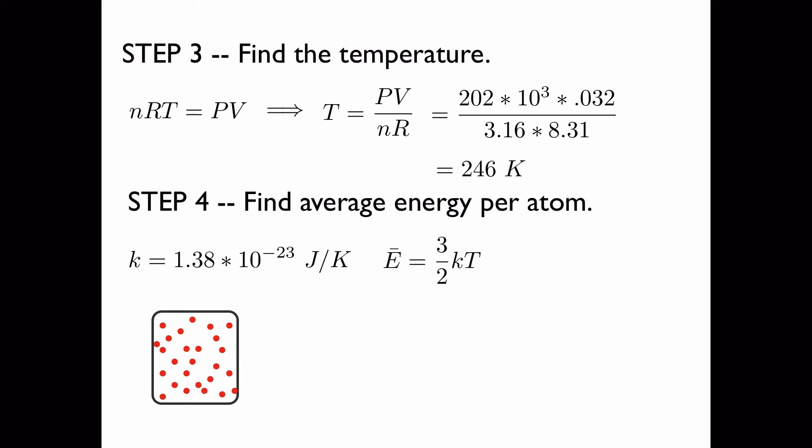This expression applies to an ideal gas but it can also apply to some other gases. So we plug in Boltzmann's constant and the temperature that we just found and we find out that each atom has an energy equal to this in joules.